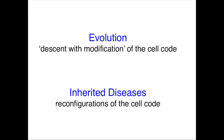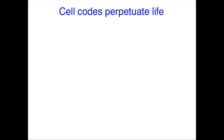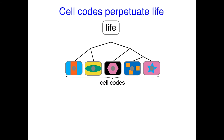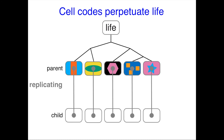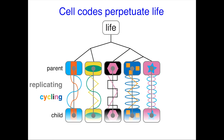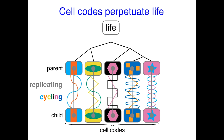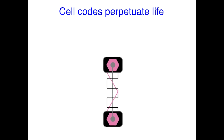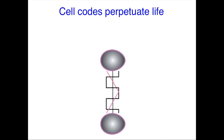Inherited diseases could be caused by reconfigurations of the cell code. With this perspective, we can see that since life began with the first cell code, it has diversified to generate the many different cell codes that are needed for making each organism. Cell codes are transmitted from parent to child as two interdependent stores of information: the sequence information in the genome that is transmitted through replication, and the arrangement of all molecules within a cell that cycle throughout the development of the organism such that it is nearly recreated in successive generations. In this way, cell codes perpetuate life, egg to egg, or chicken to chicken.